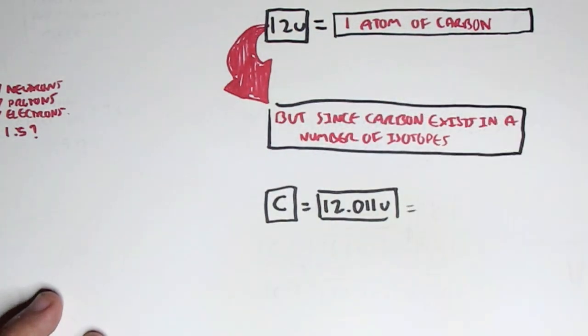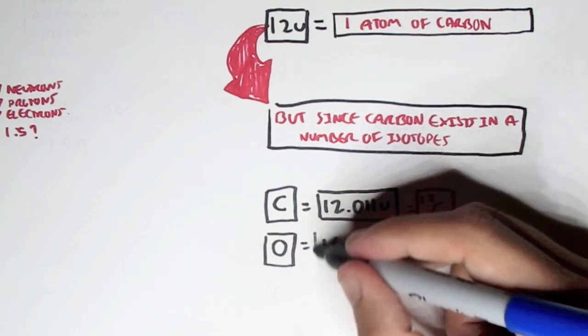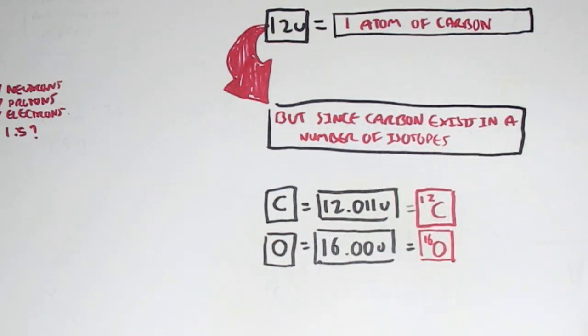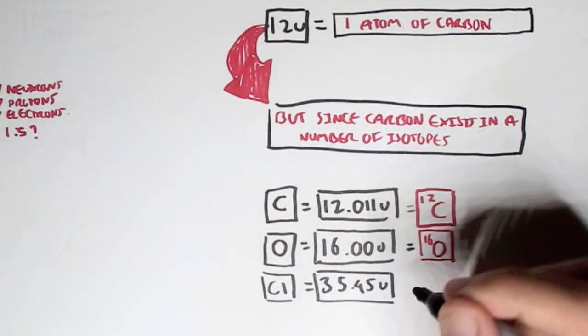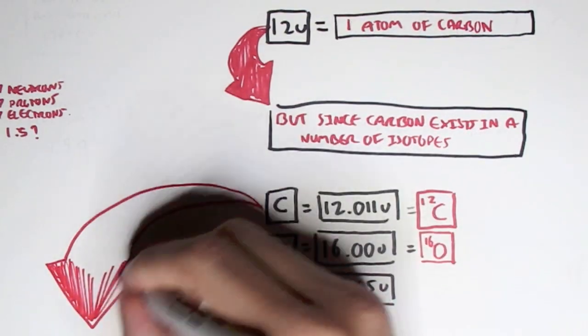And so, we can write this as carbon 12. Oxygen has atomic mass unit of 16, so we got oxygen 16. And chloride has the atomic mass of 35.45.